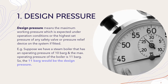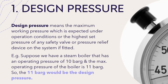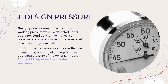Design pressure means the maximum working pressure expected under operating conditions, or the highest set pressure of any safety valve or pressure relief device on the system if fitted. For example, suppose we have a steam boiler with an operating pressure of 10 bar gauge and a maximum operating pressure of 11 bar gauge. The 11 bar gauge would be the design pressure, because we don't want to operate the boiler beyond that.